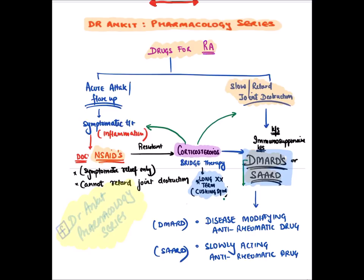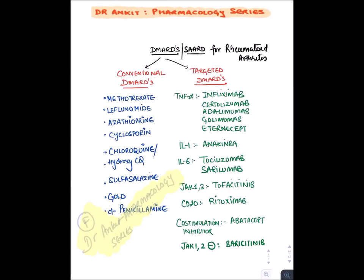Here is the complete list of DMARDs. We have older DMARDs which decrease the level of lymphocytes, like methotrexate — an anti-folate compound that inhibits folic acid, preventing lymphocyte development; methotrexate also causes adenosine flux which suppresses lymphocytic count. We have leflunomide, which inhibits pyrimidine synthesis by blocking dihydroorotate dehydrogenase enzyme. We have azathioprine, which inhibits HGPRT. We have cyclosporine, a calcineurin inhibitor. We have the anti-malarial drugs chloroquine and hydroxychloroquine.